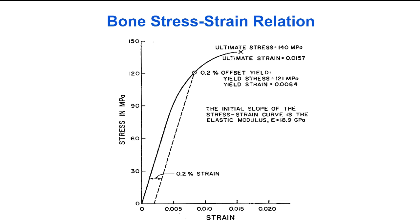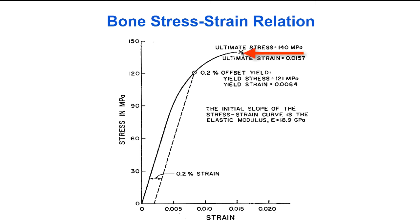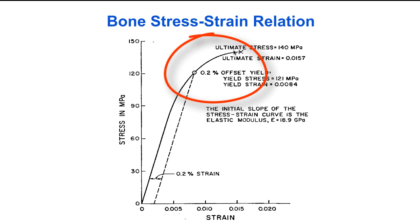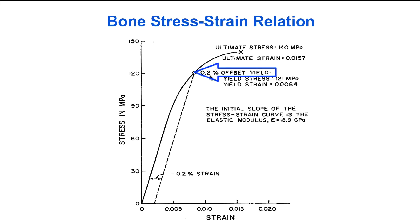A typical stress-strain relation for human long bone shows that for strains less than 0.5%, the relation is linear. After this, the relation becomes non-linear — the bone starts to yield and fracture, ultimately failing. The strength of bone is often measured as the ultimate tensile stress, about 140 MPa, and the ultimate tensile strain, about 1.5%. In between the ultimate failure point and the linear portion, there is a non-linear region during which damage can occur. It's not easy to tell from the stress-strain curve where the yield point is.